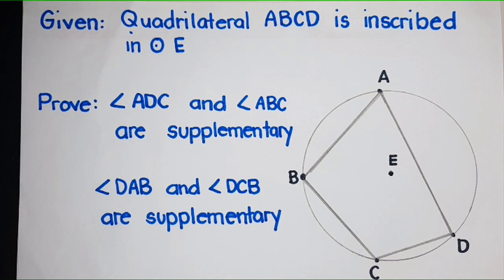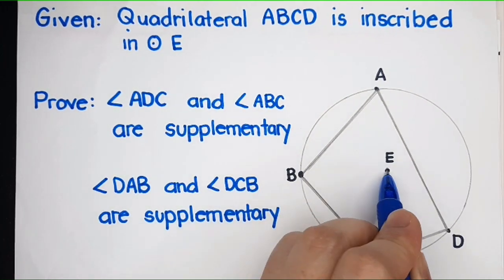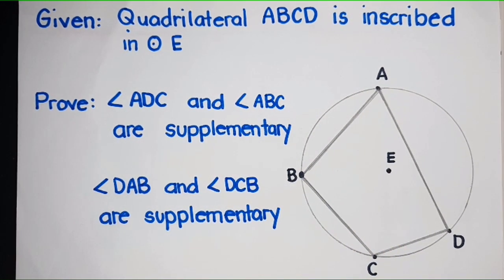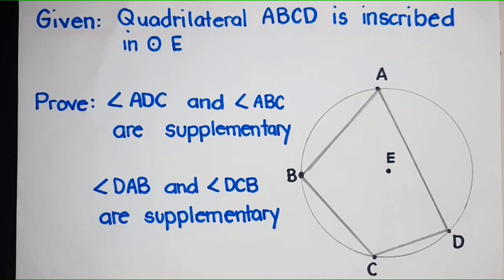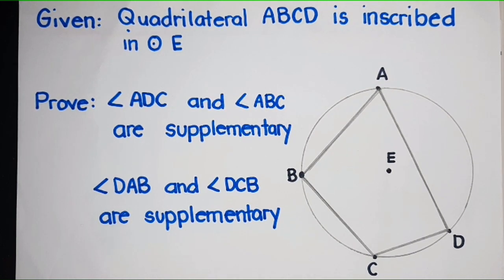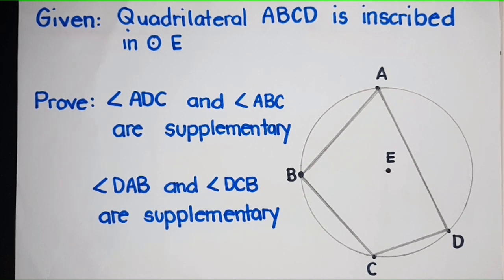Here, we're given a quadrilateral A, B, C, D, and this quadrilateral is inscribed in circle E. Circle E means the center of the circle is at point E. What is a quadrilateral? Any polygon that has four sides — napakaraming quadrilaterals. It can be a square, a kite, a rhombus, a rectangle, a parallelogram, a trapezoid — basta may apat na sides, quadrilateral yun.